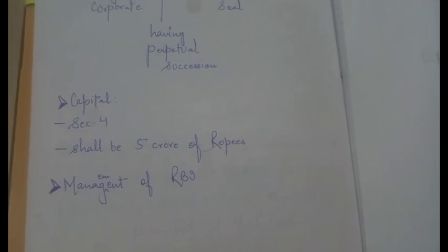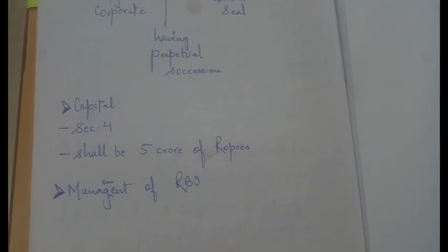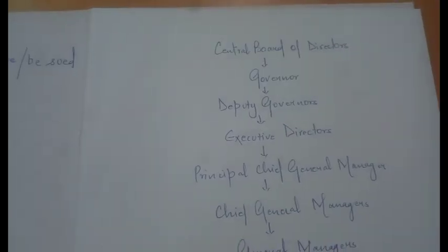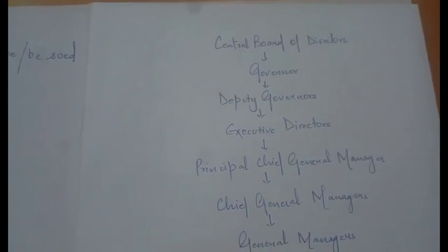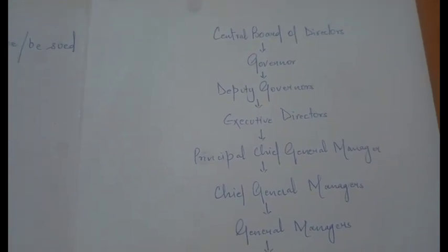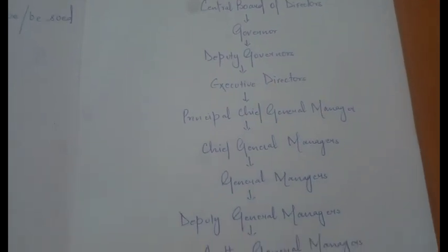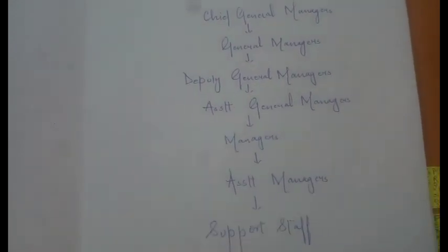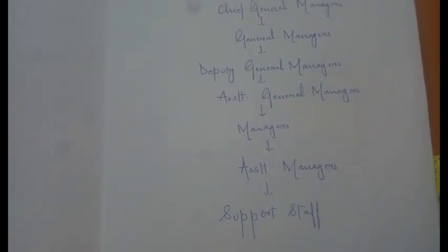Moving towards the management of RBI, it shows a hierarchical framework of authorities. At the very top is the Central Board of Directors, then the Governor, Deputy Governors, Executive Directors, Principal Chief General Manager, Chief General Managers, General Managers, Deputy General Managers, Assistant General Managers, Managers, Assistant Managers, and Support Staff. This is the hierarchical framework of authorities working under the Reserve Bank of India.